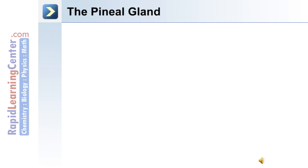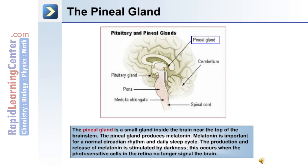The pineal gland is a small endocrine gland inside the brain, near the top of the brain stem. It produces melatonin, which is important for a normal circadian rhythm and daily sleep cycle. The production and release of melatonin is stimulated by darkness, occurring when the photosensitive cells in the retina no longer signal the brain.